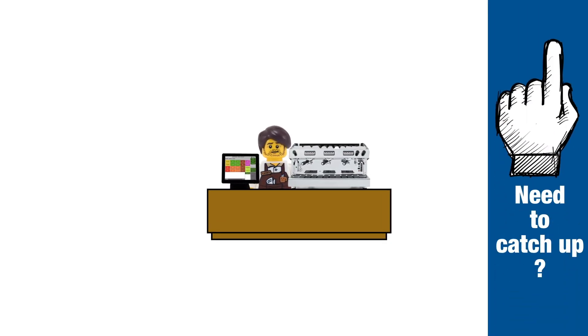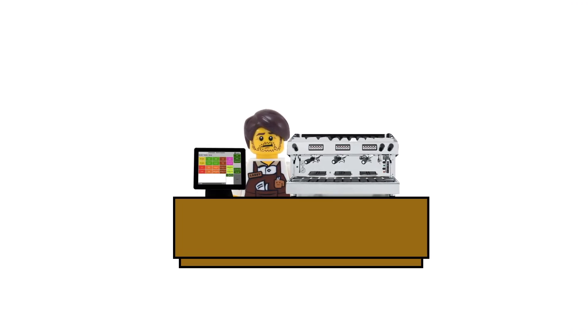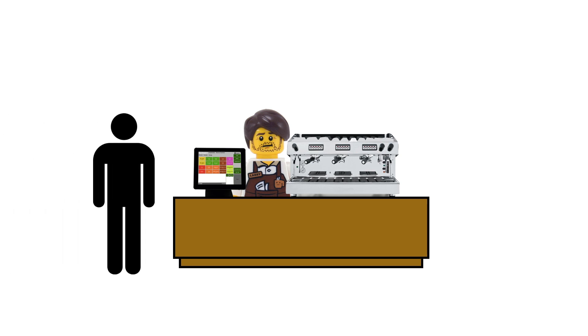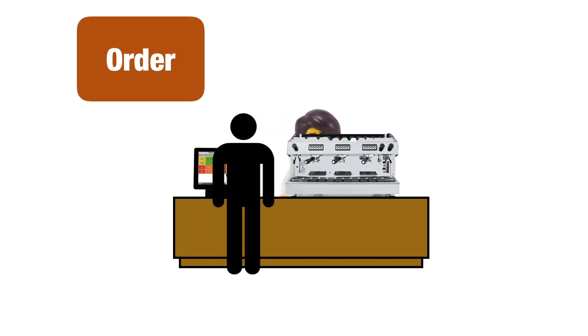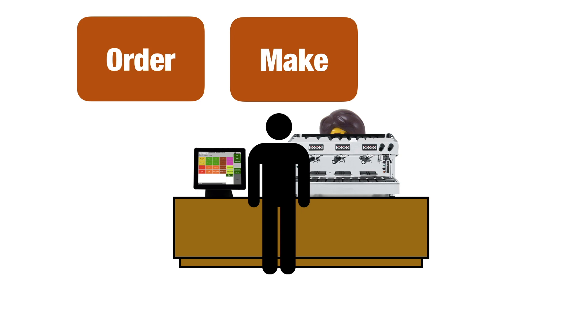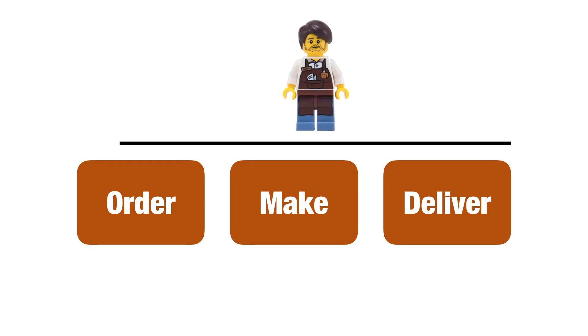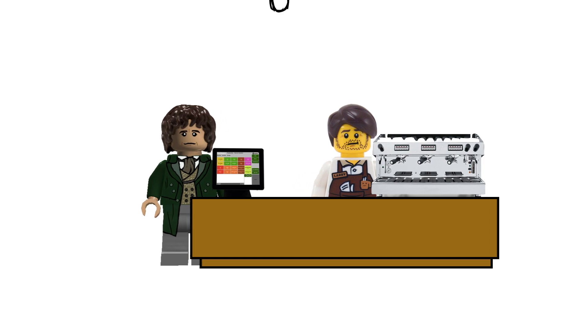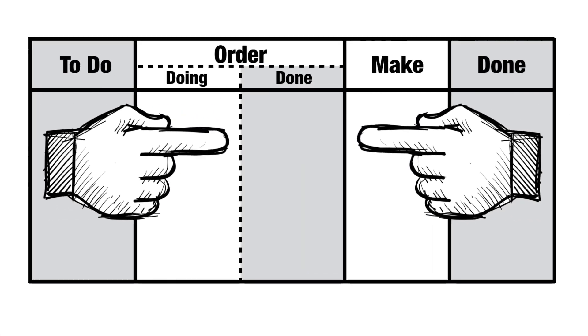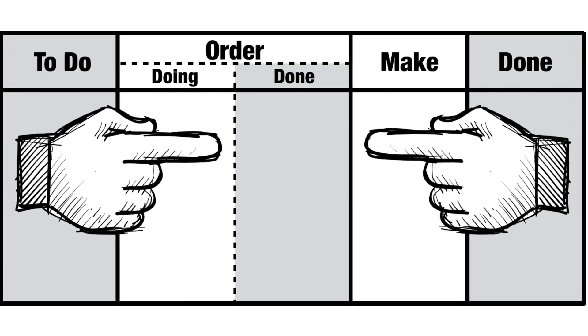Things started so well, so simply — a lone barista bestriding his humble coffee shop like a colossus, doing everything in his defined process: taking the order, making the coffee, and delivering it back to the customer. Adding a dedicated order-taker into the brew didn't seem like such a big deal, but with specialization came the need for orchestration. Key to that was the buffer — in the coffee shop, this area of counter; on the board, this column. The gray color is a reminder that no value is added here. Waiting is one of several forms of waste, but it is a price we pay willingly for switching the system from push to pull.